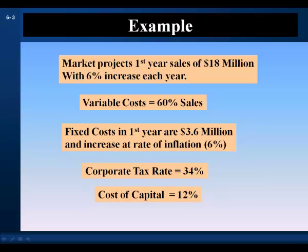Marketing projects first-year sales of $18 million with a 6% increase each year. Variable costs are estimated at 60% of sales. Fixed costs in the first year are $3.6 million and will increase at the rate of inflation. Our expected inflation rate is 6%. The corporate tax rate is 34%, applied to operating income and also to salvage value.